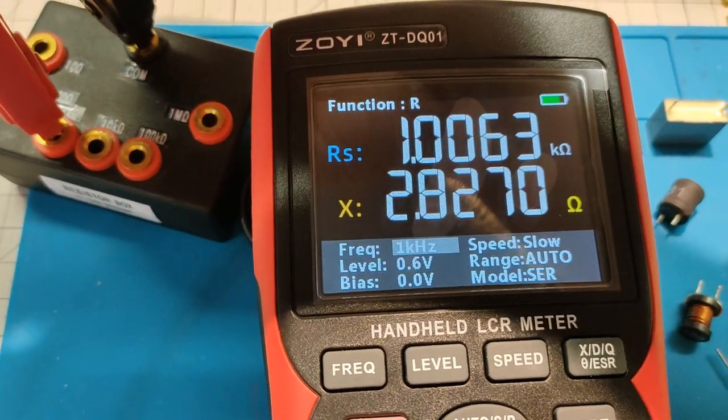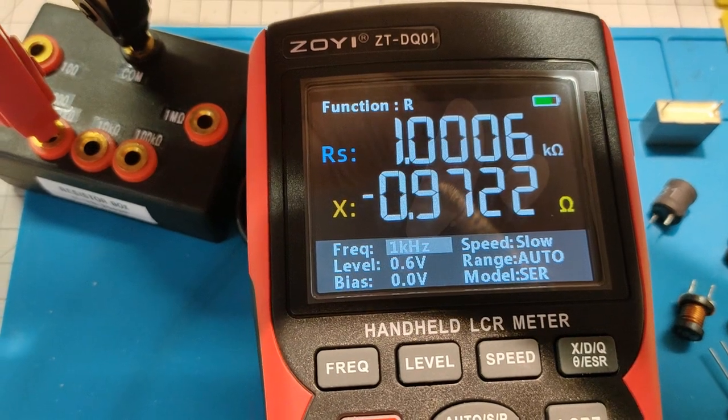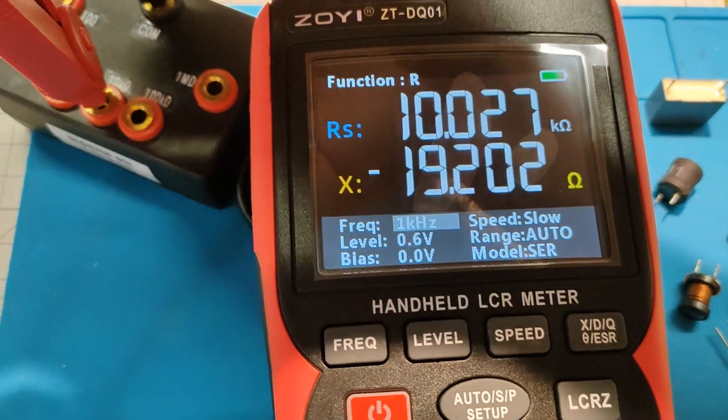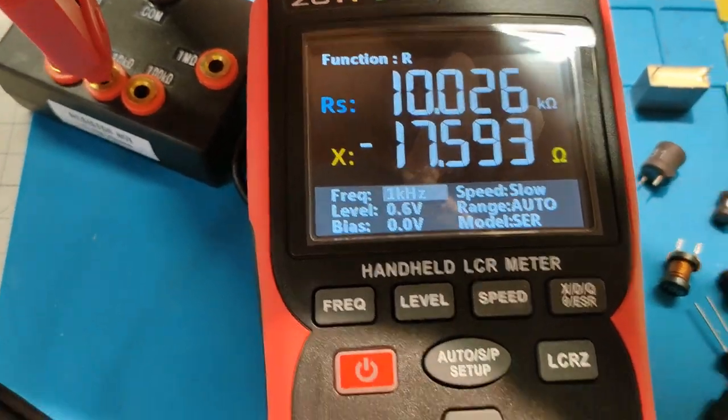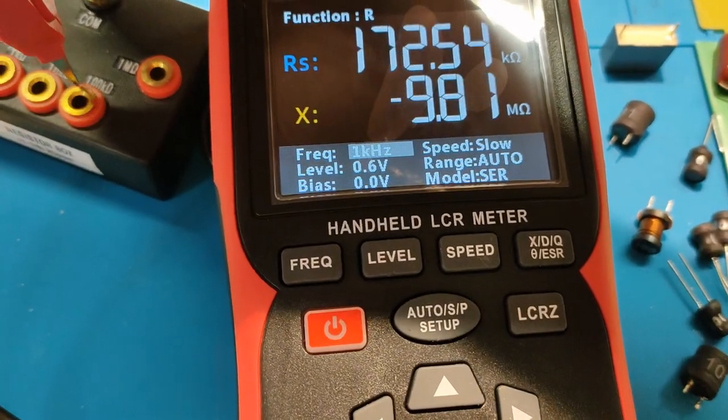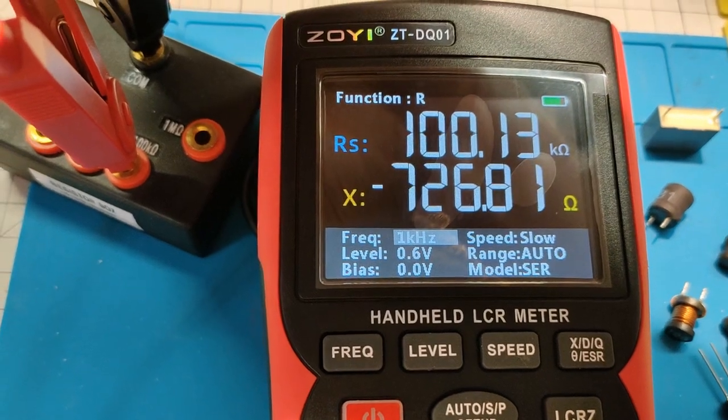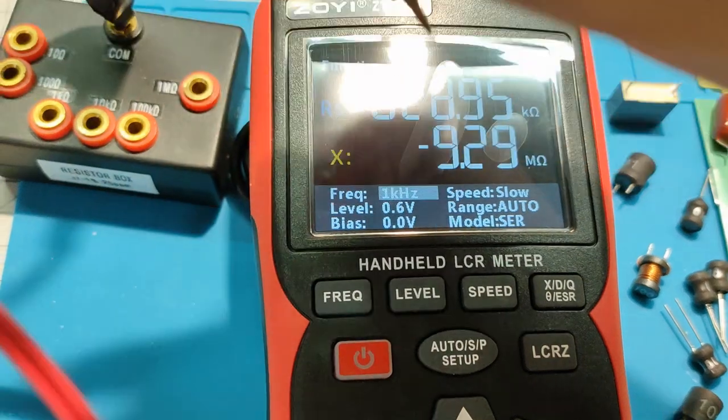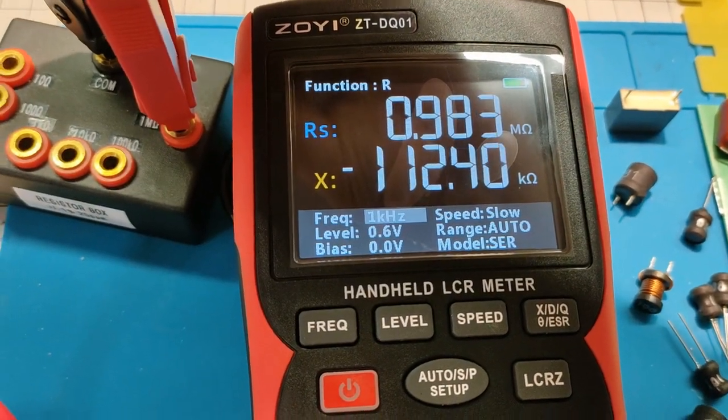1 kilo ohms. 10 kilo ohms. 100 kilo ohms. And 1 mega ohm.